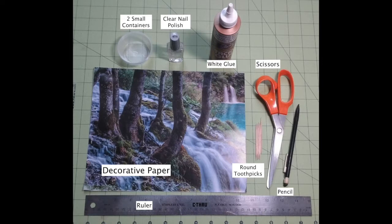You also need a ruler, some scissors, a pencil, a few toothpicks at least one of which is round, some white glue, some clear nail polish, and a couple of small containers, one of which should be narrow enough to lay the toothpick across the top.